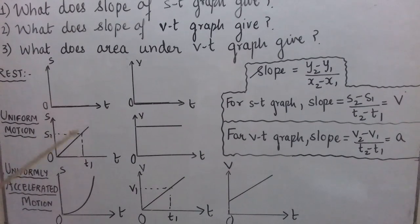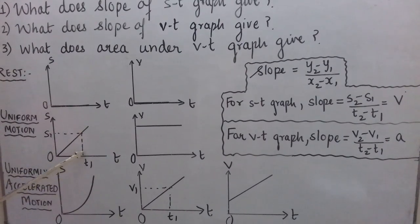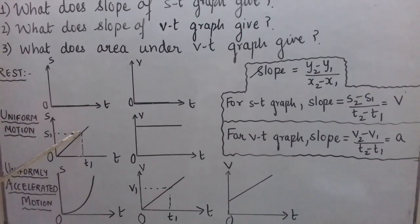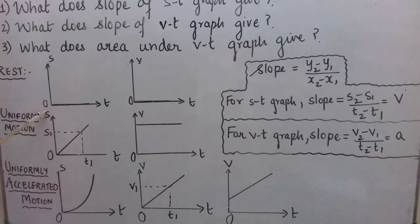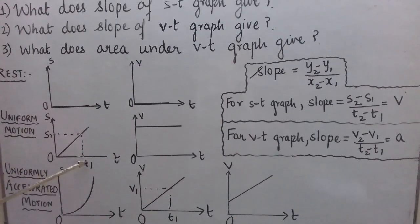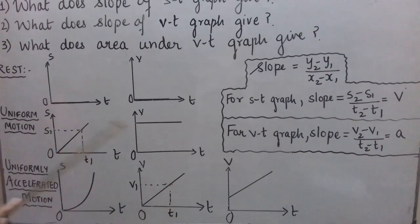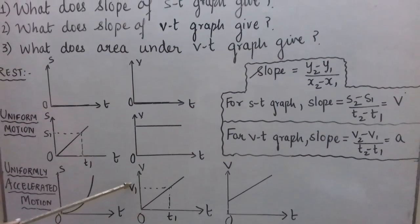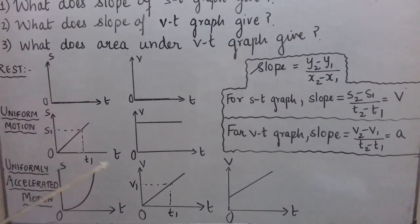The second use of graphs: suppose I don't know at time T1 what the value of distance covered is, but I have the graph. I can drop a perpendicular from T1 on the time axis, make it intersect the graph, and then drop a perpendicular on the distance axis to read off the distance travelled. Similarly, using a VT graph I can find out the body's velocity at any time T1.